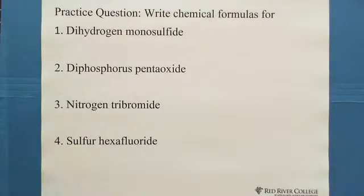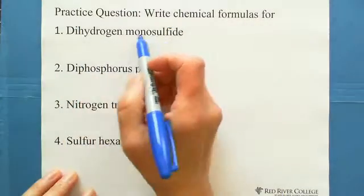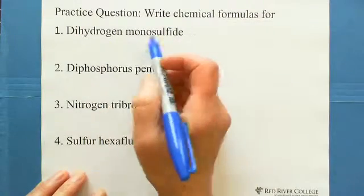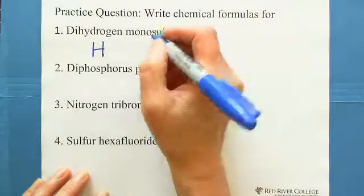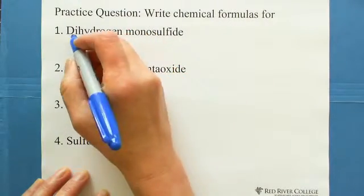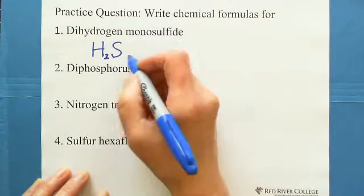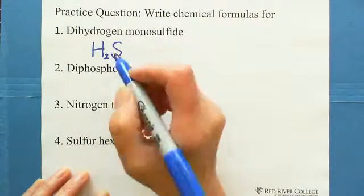Let's do some practice questions. If you already understand, you can pause the video and try by yourself, then continue watching to see if you are right. The first one is dihydrogen monosulfide. First, write both hydrogen and sulfur — both are non-metals. Di means 2 for hydrogen, so write subscript 2. Mono means 1 for sulfur, so we don't need to write the 1.